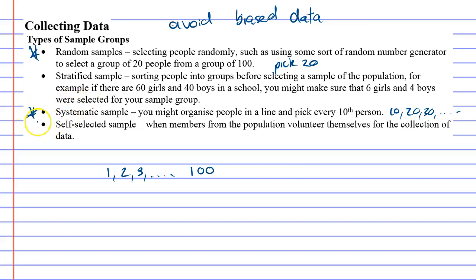The one at the end, self-selected sample, is not very good. This one relies on people to volunteer themselves for the collection of data. So you're not really controlling who's going to come in and give you the data you want. It's really risky because you don't know who's coming and giving you the data. You don't know what groups of people are coming in to volunteer this information.